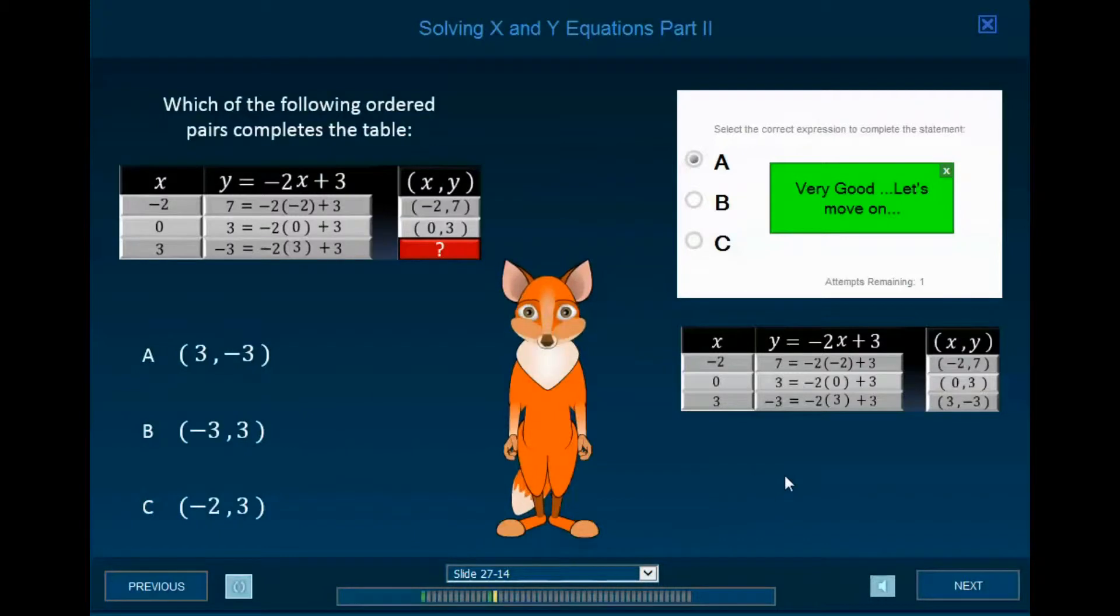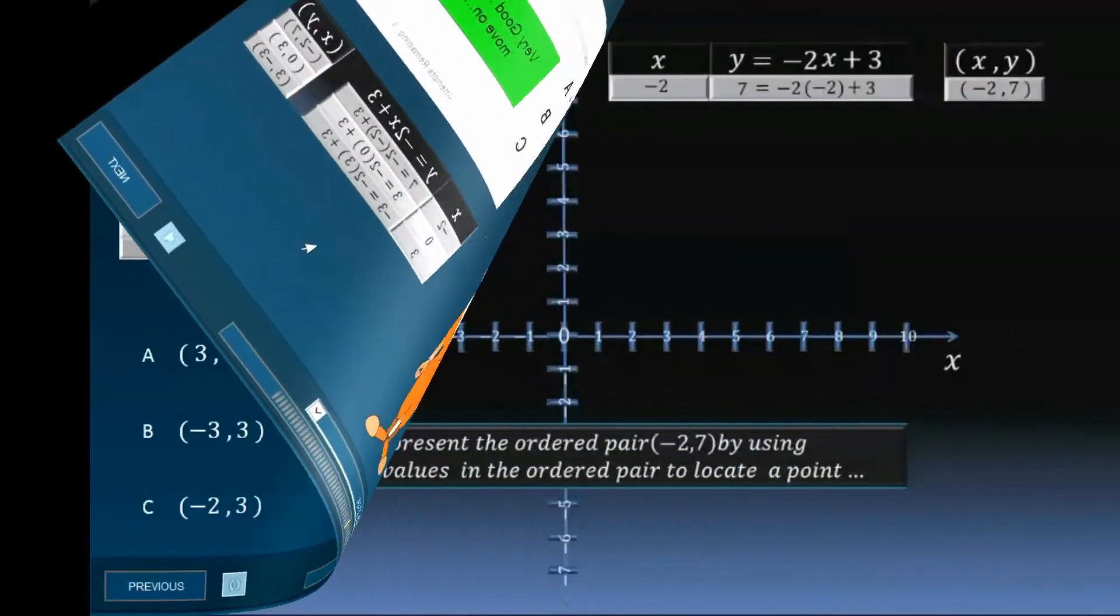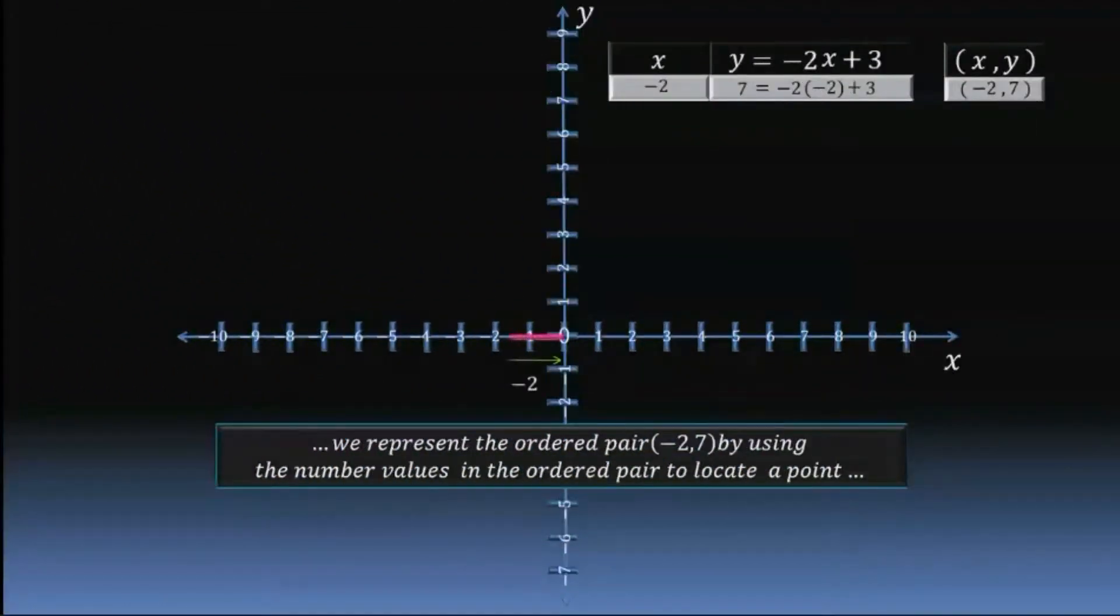Nicely done. The ordered pair negative 2, 3 completes the table. We first move 2 units in the negative x direction to represent a negative 2 for x. Then we move 7 units in the positive y direction to represent 7 for y. And we mark that point.